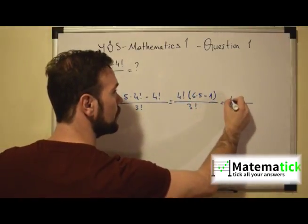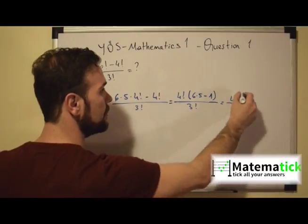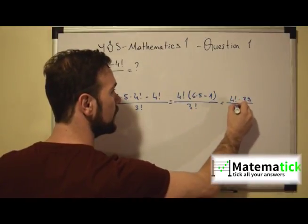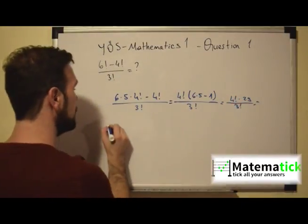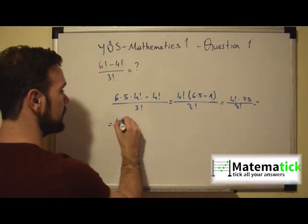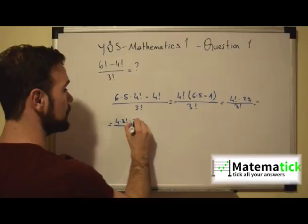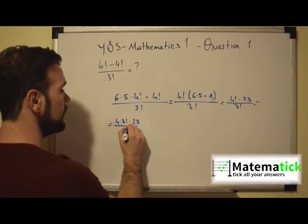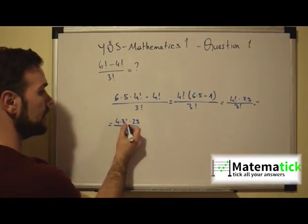So 4 factorial times 6 times 5 is 30 minus 1 is 29 over 3 factorial and that will be equal to another way of writing 4 factorial is 4 times 3 factorial times 29 over 3 factorial. So we can now cancel 3 factorials.